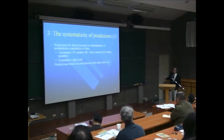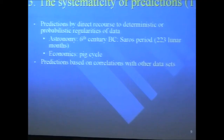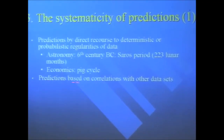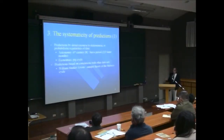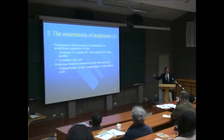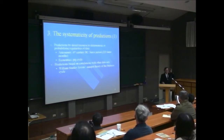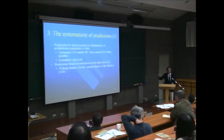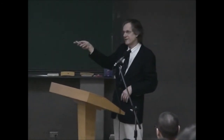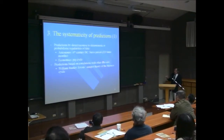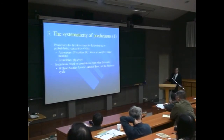William Stanley Jevons proposed the Sunspot Theory of the Business Cycle: the business cycle correlates with the sunspot cycle. This sounds strange today, but at the end of the 19th century most workers were farmers; farming depends on weather; weather depends on sunspot activity. So it is not pure coincidence. That is an example of prediction based on correlation with other data sets — predicting data on the basis of other data sets.